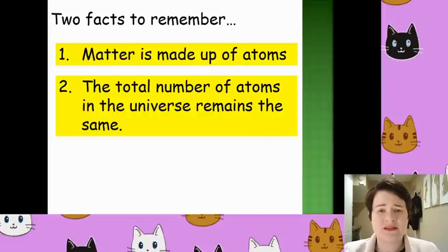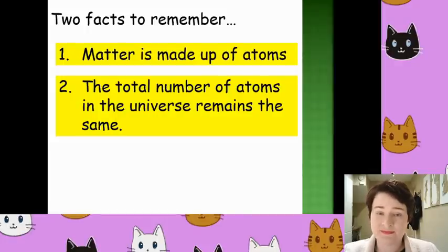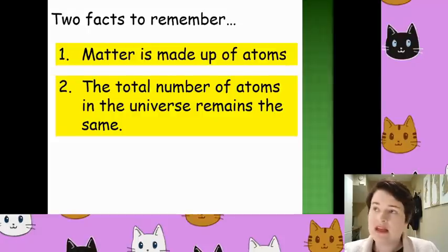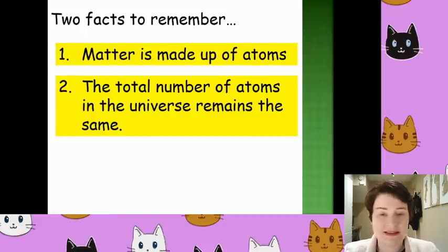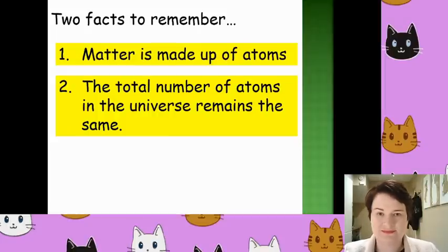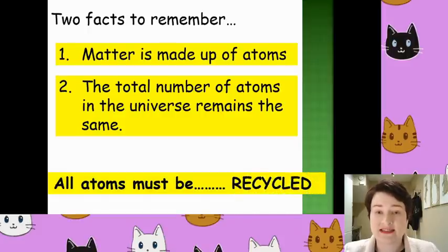From this concept there are two main things to remember. First, matter — the things around us — are all made out of atoms. Second, the total number of atoms in the universe is a constant number; it always remains the same. The atoms might combine differently to form compounds, ions, or ionic compounds, but they are still present as atoms and there's still the same number of them. All atoms must be recycled constantly — it is a constant process.